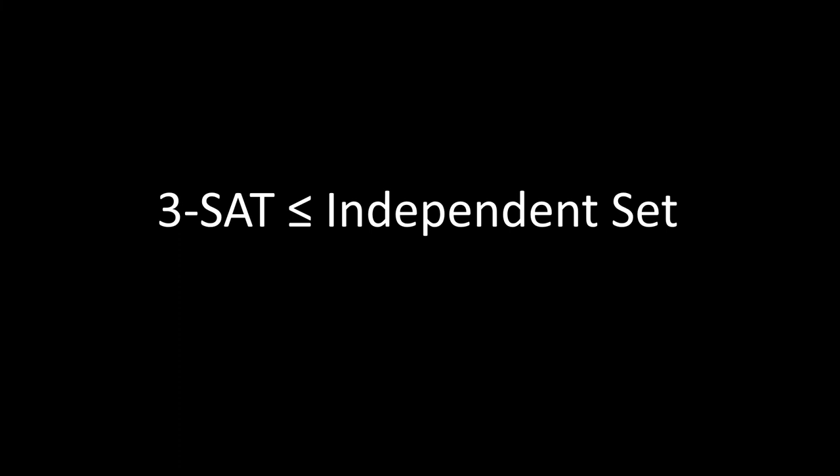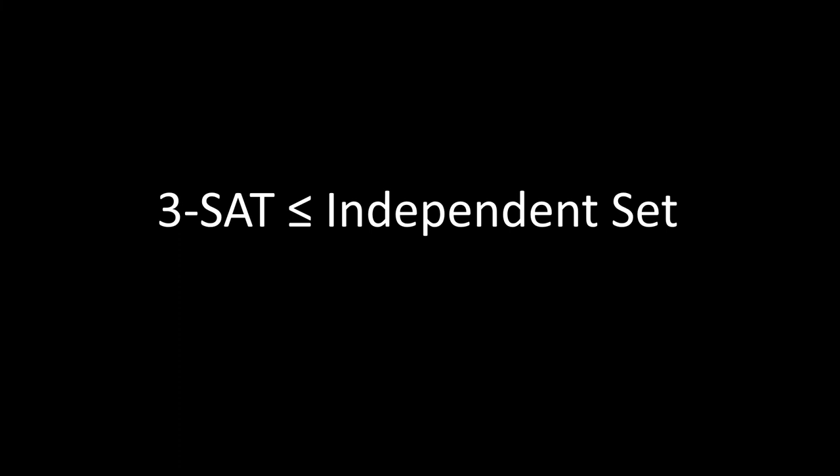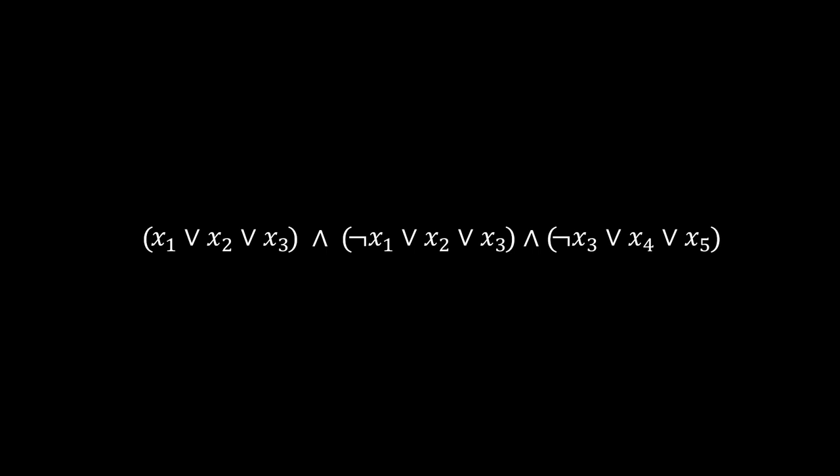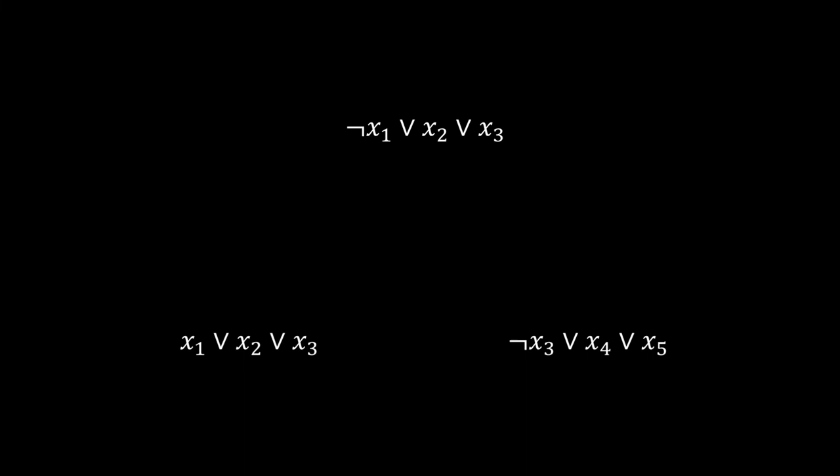This being said, we will now show a reduction from 3-SAT to independent set, implying that independent set is NP-complete. We need to show that any Boolean formula can be modeled as a graph, such that satisfying assignments correspond to independent sets in the graph. For each clause in the formula, we introduce a cluster of three interconnected nodes, labeled with the literals in the clause. Observe that multiple nodes can be labeled with the same literal. Moreover, we add edges between any two nodes representing opposite literals.